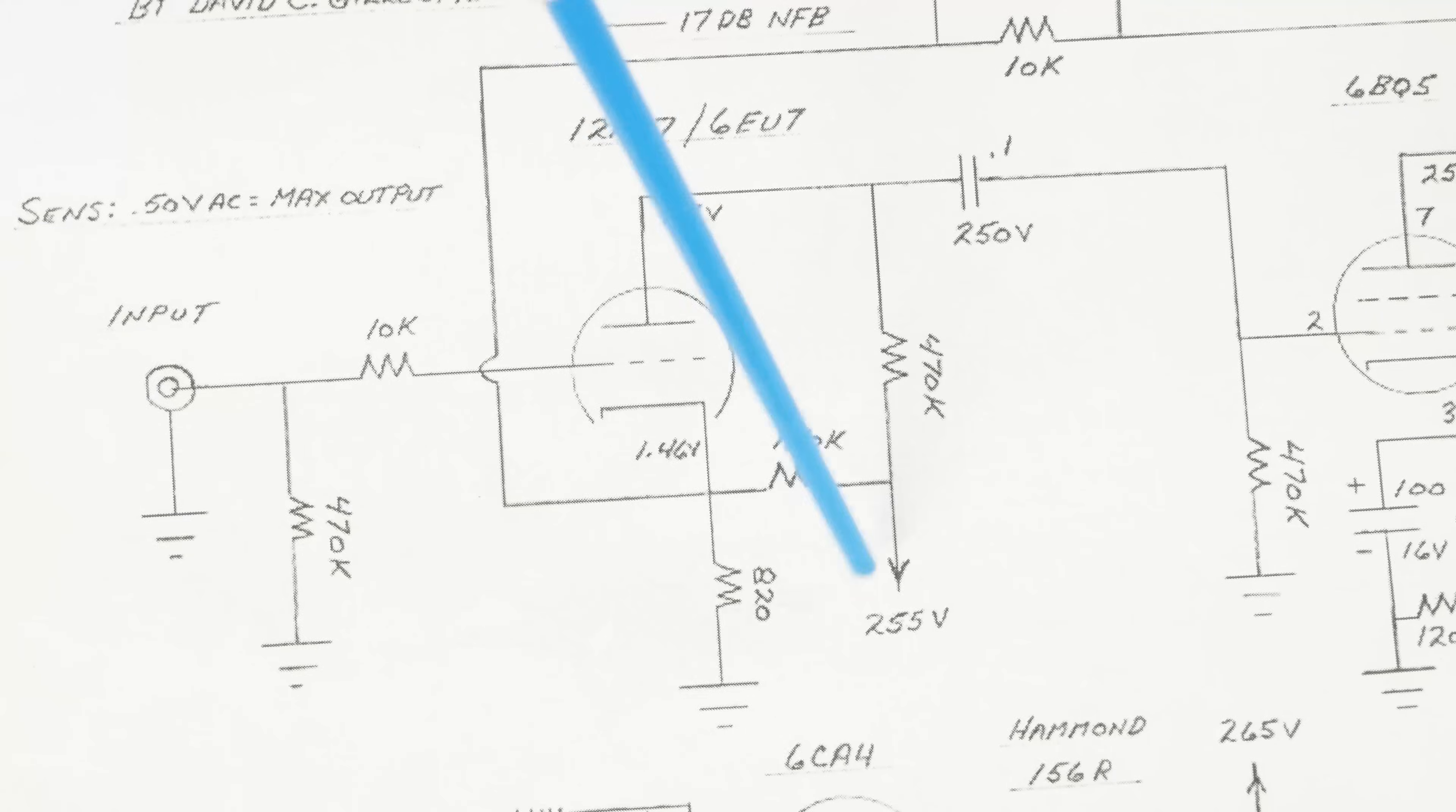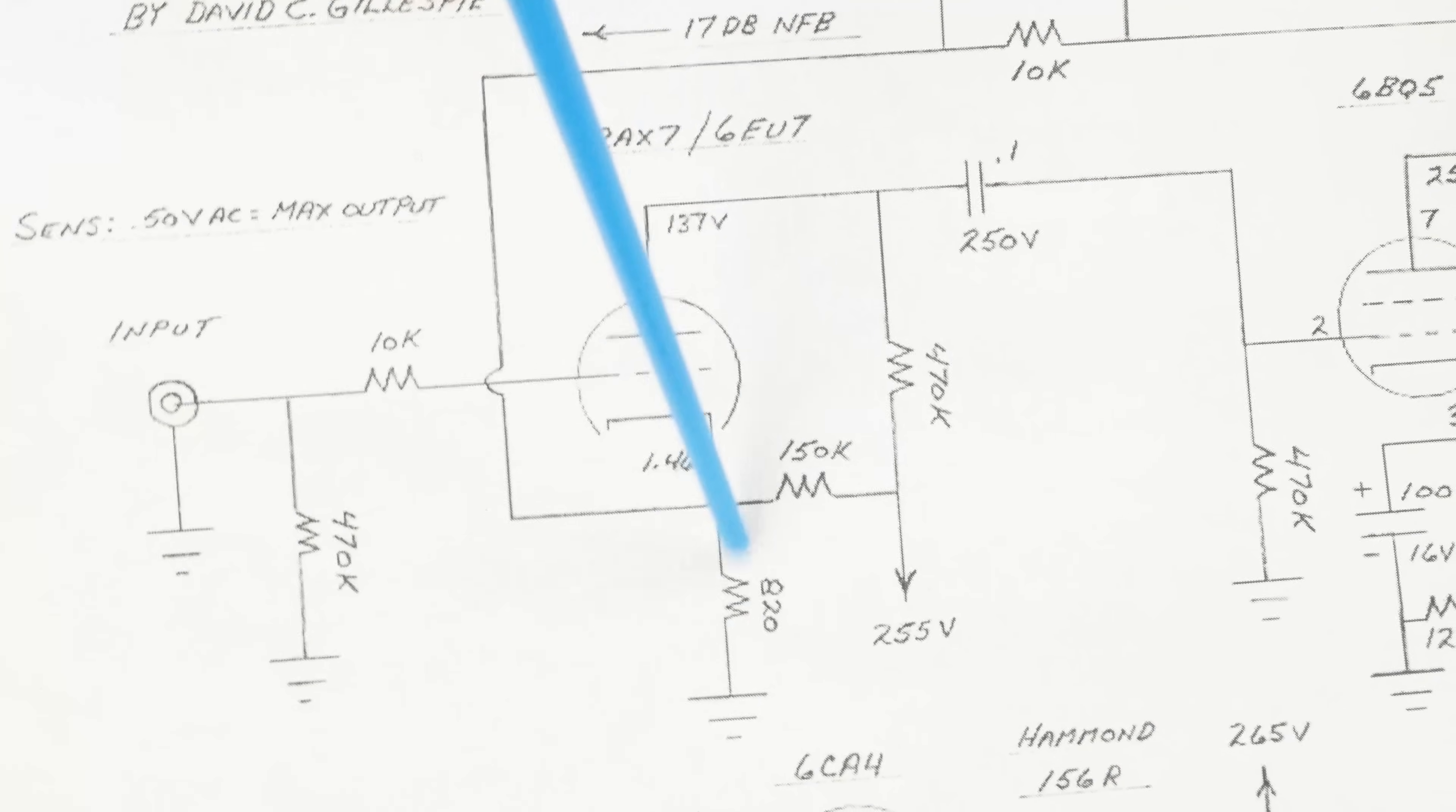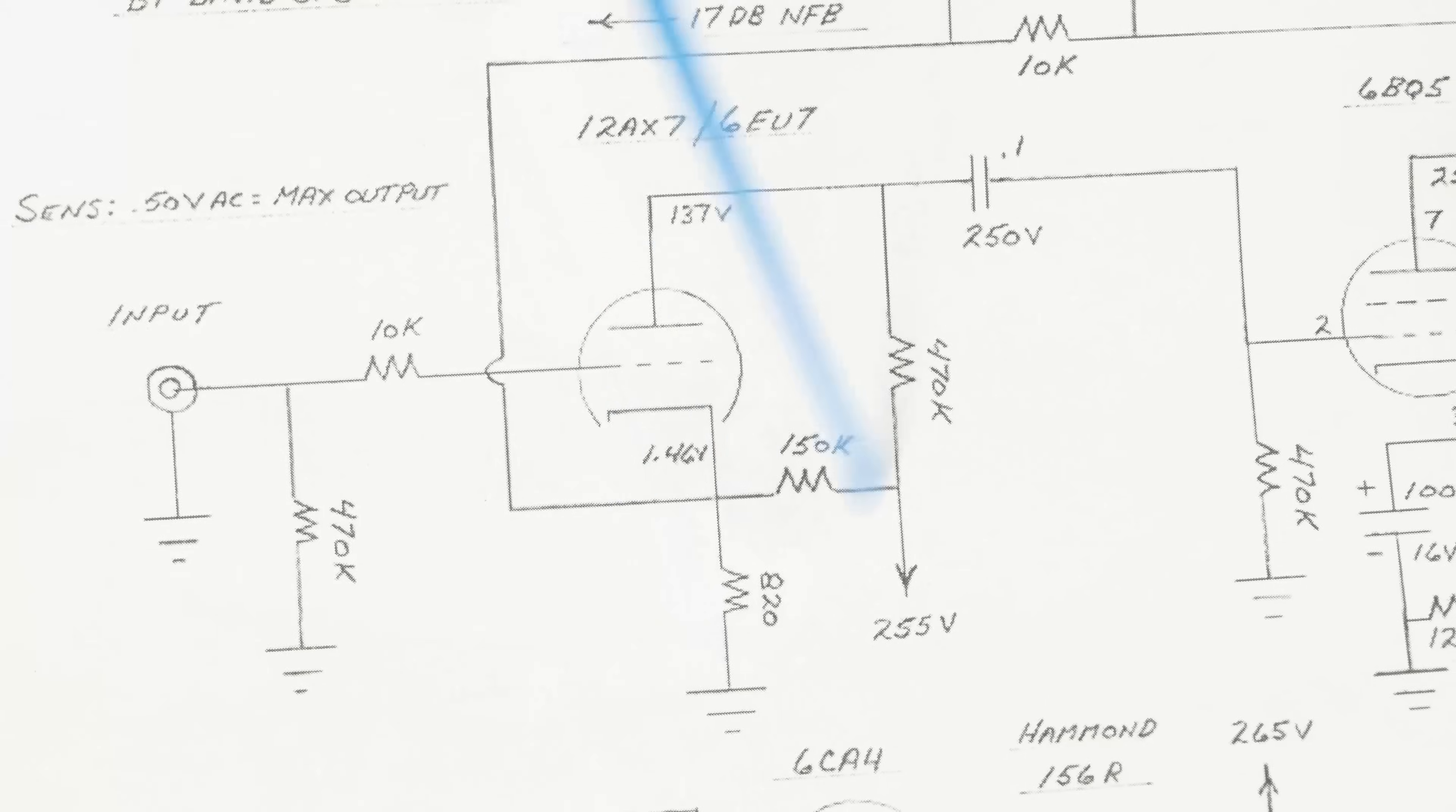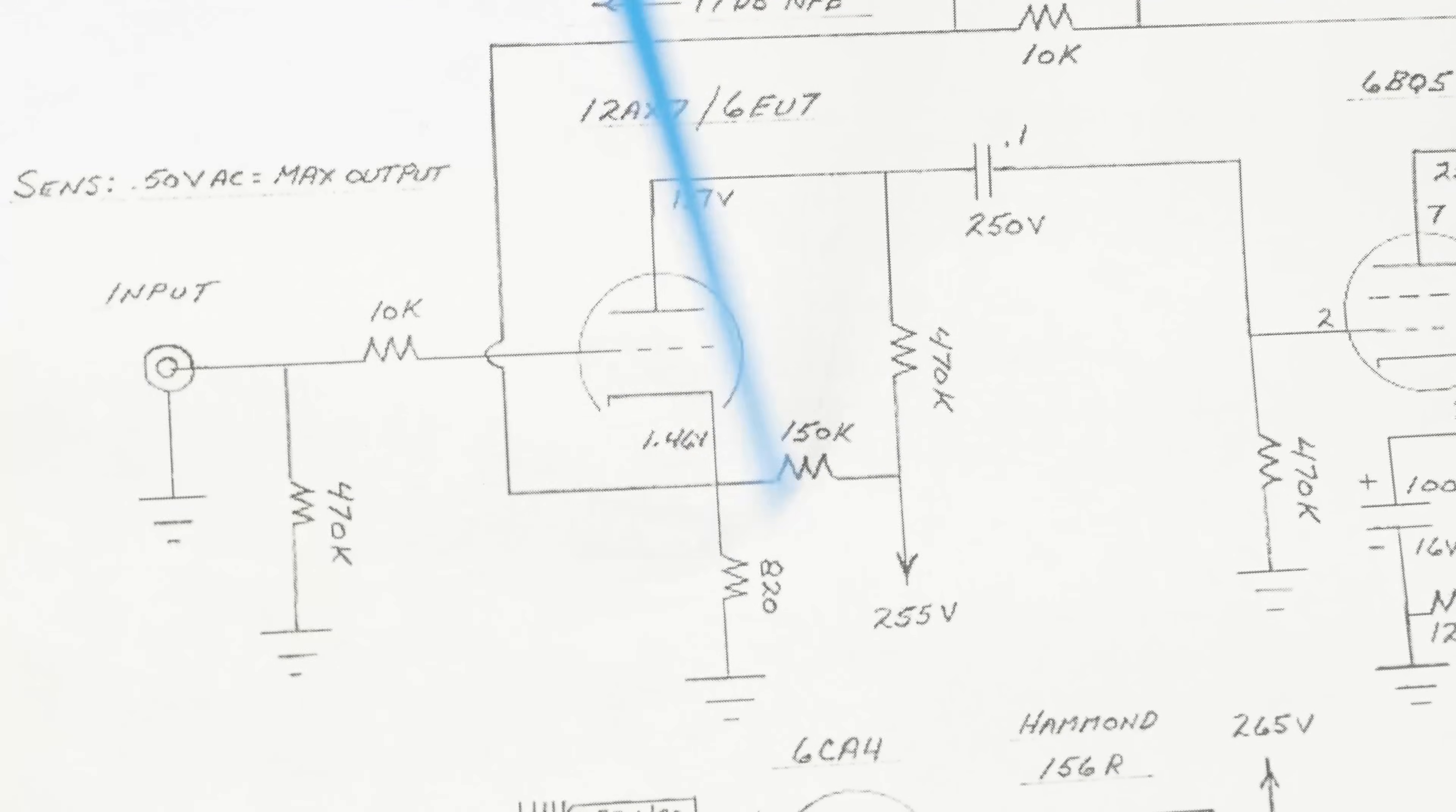The other thing this does is it creates a pathway to ground for all these power supply capacitors, so we don't need a bleeder resistor for the power supply. The voltage on these caps will get bled through here to ground. This does need to be a two watt part. I went ahead and used two watts for both of these.